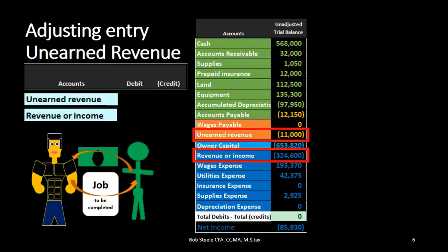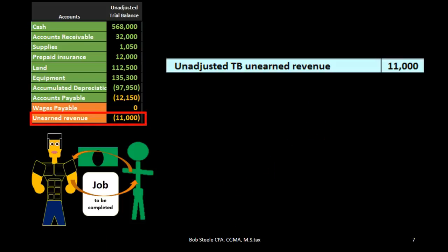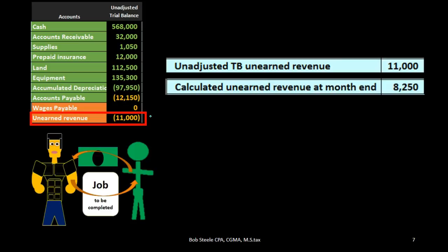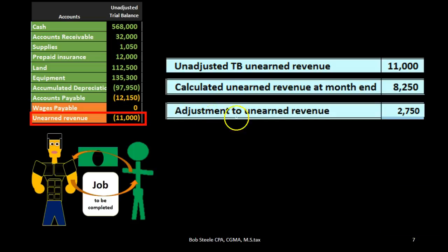And then at the end of the time period, what we need to decide is how much of this unearned revenue — which we have received in terms of cash but have not yet earned — how much of it has now been earned? That is the question. A book problem will typically give us the number that unearned revenue should be at the end of the time period. So we're going to take the trial balance unearned revenue of $11,000. The problem is going to tell us the amount of unearned revenue that will still be unearned as of the end of the month or year, which in this case is $8,250.